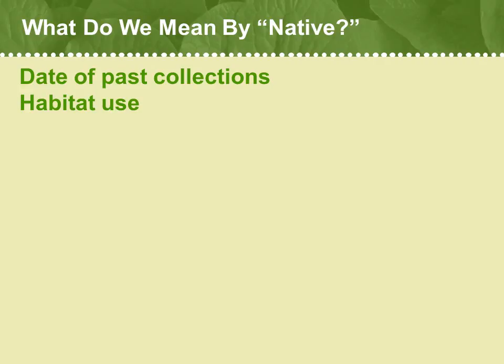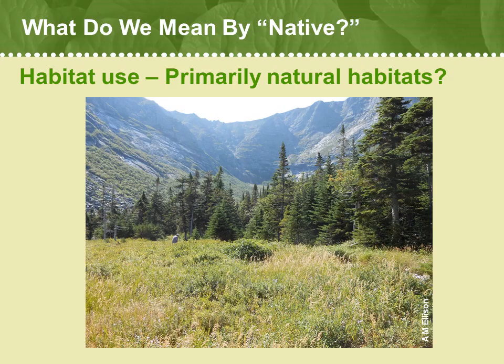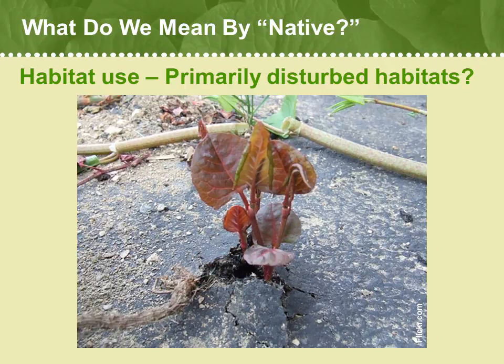We also note the habitat uses of particular plants. Native plants often specialize on particular types of intact habitats and show special adaptations that allow them to survive in the environmental conditions of those habitats. Other plants that are non-native tend to be able to inhabit a broad range of habitats. They are planted in many different garden situations and adapt quickly. This Japanese knotweed appears able to sprout right through pavement.